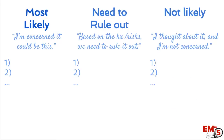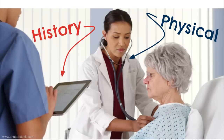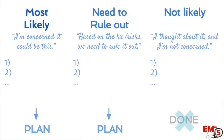Now that we've sorted our differential into each of the three columns, we need to figure out what the plan is going to be. For the first two — most likely and need to rule out — you need to come up with a plan to address each diagnosis. For the not as likely category, these are things you looked for during the history and physical exam, and you're not finding any evidence to support them. So you don't have to do any further workup for the not as likely category. You thought about them, did a great H&P, and you're not concerned.